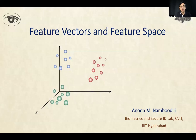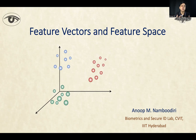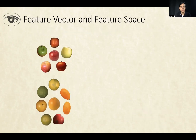Features, feature vectors, and feature spaces form one of the core components of our understanding of machine learning, and several other ideas are built upon these concepts. So let's take a closer look at what feature vectors and feature spaces are.